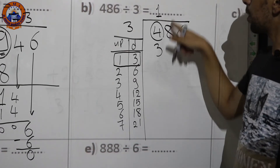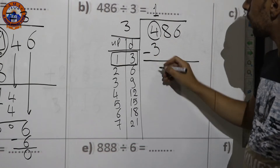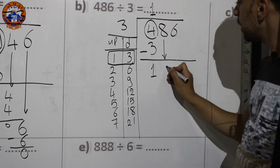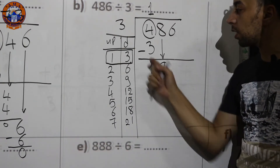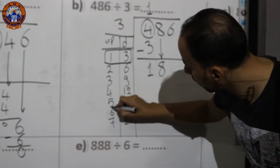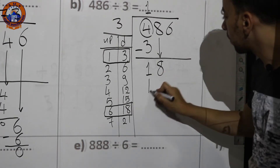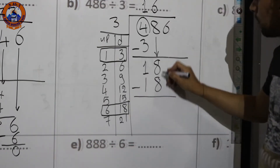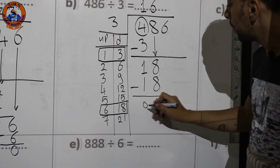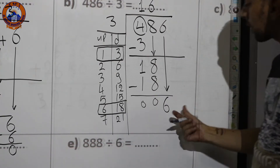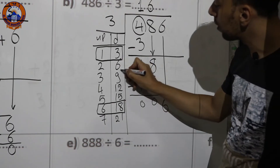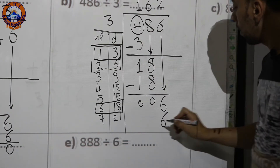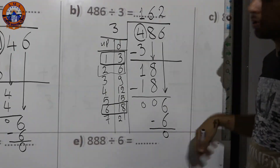Subtract: 4−3=1. Bring down the next digit 8, giving 18. Search for 18 in the table — here it is with 6. Put 18 down and 6 up. Subtract: 18−18=0. Bring down the next digit 6 — here it is in the table. Put 6 down and 2 up. Subtract: 6−6=0. No more digits to bring down.